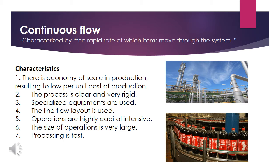Continuous flow is characterized by the rapid rate at which items move through the system. This method is appropriate for producing highly standardized products like calculators, typewriters, automobiles, televisions, and cellular phones. Characteristics include: economy of scale resulting in low per-unit cost, a clear and very rigid process, specialized equipment, line flow layout, highly capital-intensive operations, very large operation size, and fast processing. Best examples are the production of electricity and Coca-Cola or Pepsi products.